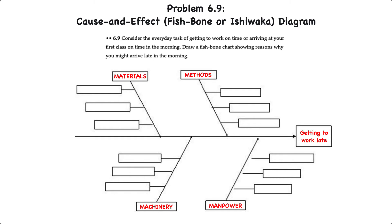We'll start with materials. In this case the material might be the road. Some things that may affect our ability to get to work related to the road could be red light malfunctions, traffic jams, or a train at a railroad crossing.